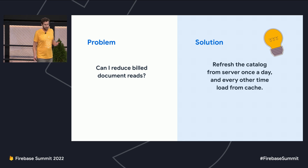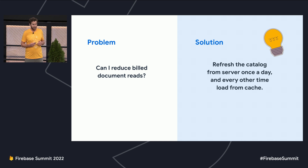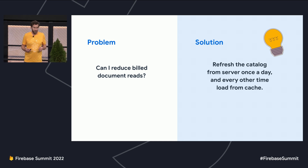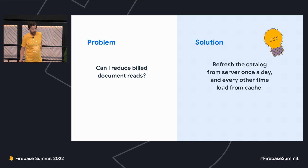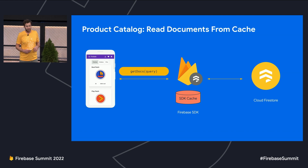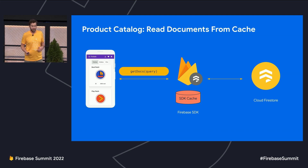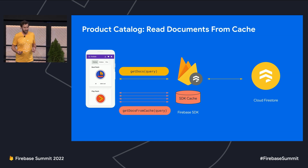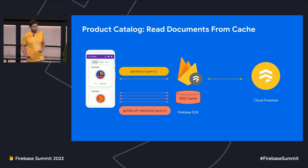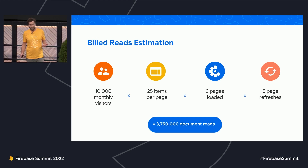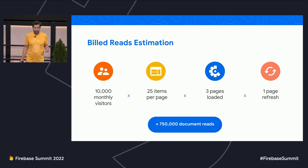I have an insight: my product catalog doesn't update very often. So I decide that if I update my application to pull the product catalog from the Firestore server only once a day, and any other time I need to query the product catalog I can query it from the local cache, I can reduce my billed reads. Now I'm only using GetDocs to query the server once a day for the product catalog, and the catalog is stored in cache. Any other time, it's queried from cache and doesn't hit the server. This potentially reduces those five page refreshes down to one, saving up to three million document reads.